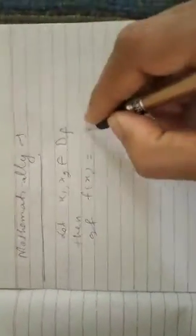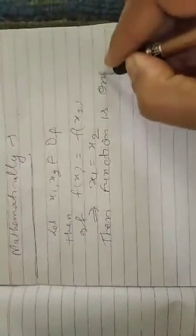Mathematically, how can we check that given function is one one or not? Or, procedure to identify that given function is one one or not. Now, let x1, x2 belongs to domain of function f. Then, fx1 equal to fx2 implies that x1 equal to x2. Then, function is one one.